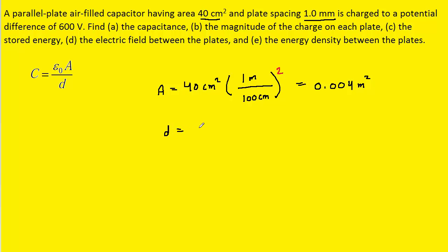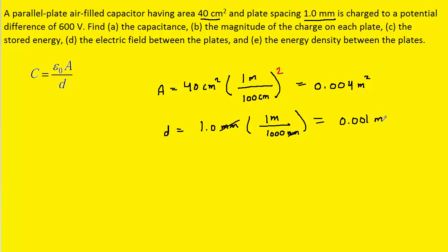The plate separation is given in millimeters, so we're going to convert that into meters by noting that one meter contains 1,000 millimeters. This way, the millimeters will cancel and we'll be left with 0.001 meters. Now that we have those values in their standard form, and we know this constant is equal to 8.85 times 10 to the minus 12, we can plug everything into the formula.